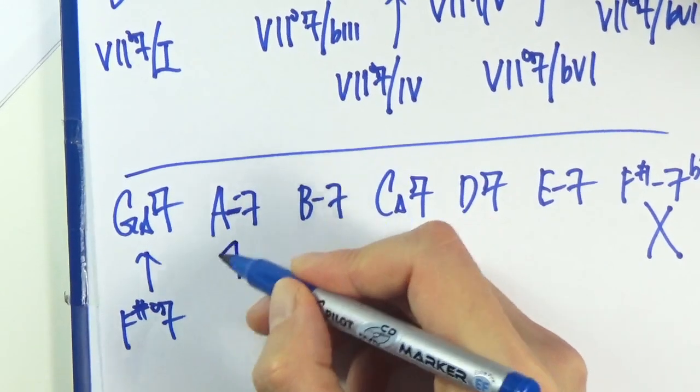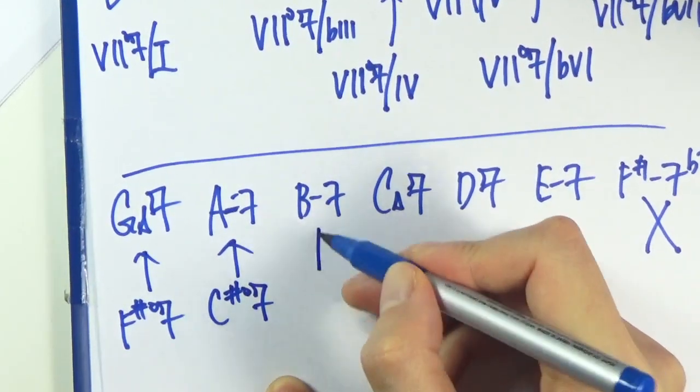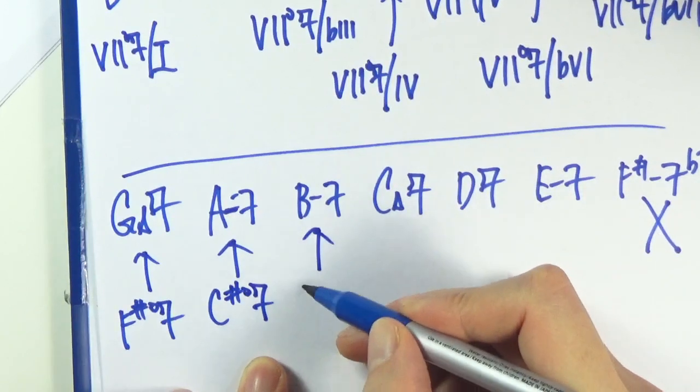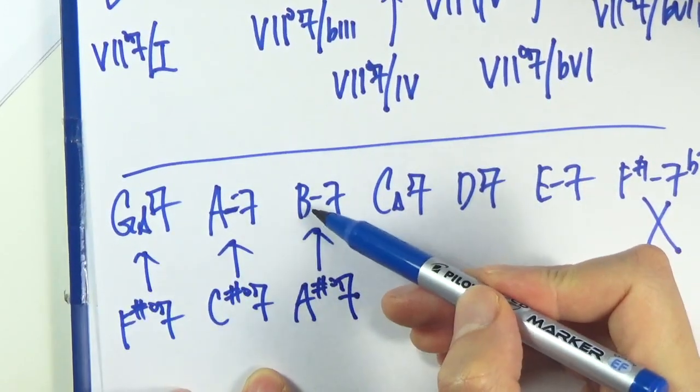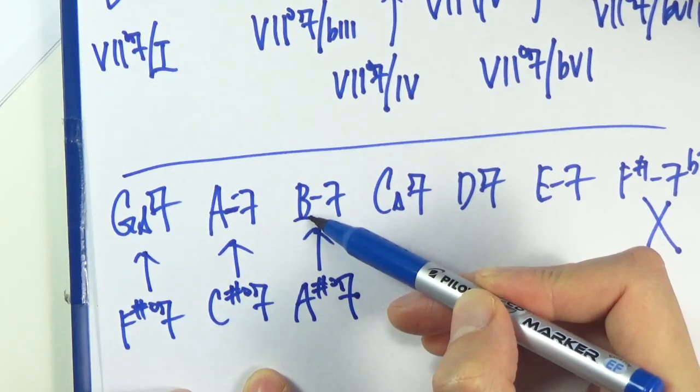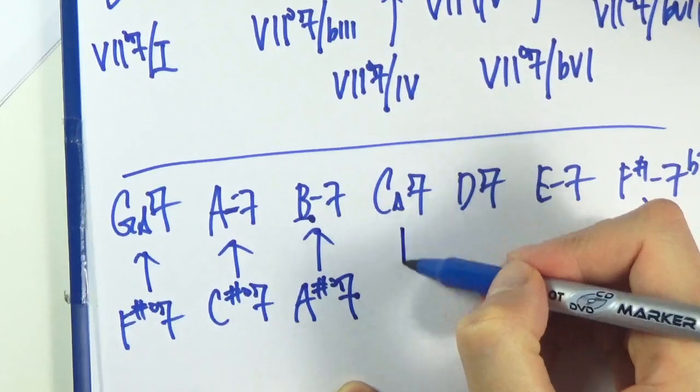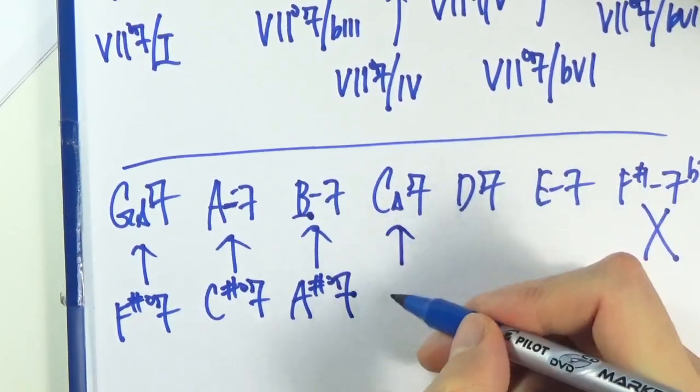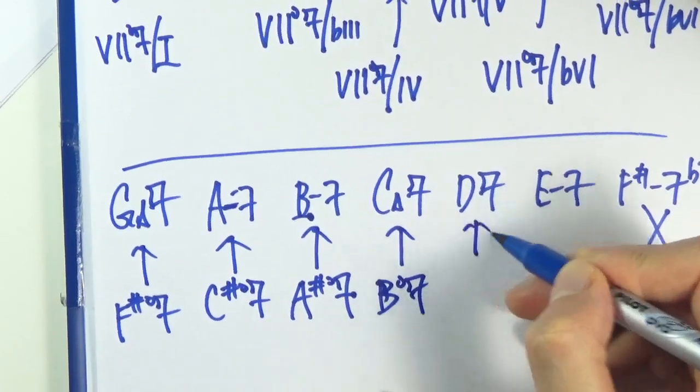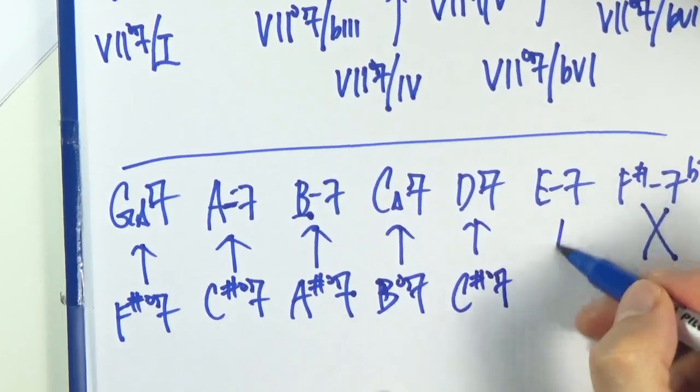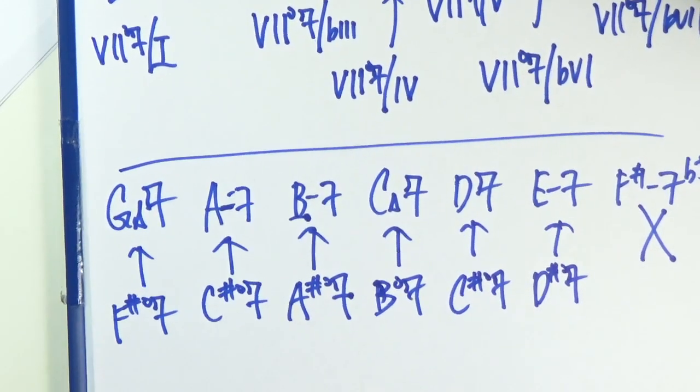And C sharp diminished 7. And that would be an A sharp diminished 7. So again, I'm just going down half step from the root. And that should yield your diminished 7 chord approach. B diminished 7, C sharp, D sharp. That's it.